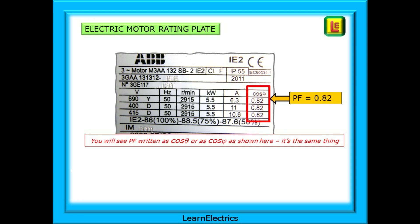A lot of equipment, especially motors, will show the power factor on the rating plate. The manufacturer will tell you how efficient the motor is. It may be labelled as power factor, PF, cos theta, or cos phi as shown on this ABB plate. With practice you will easily recognise this.